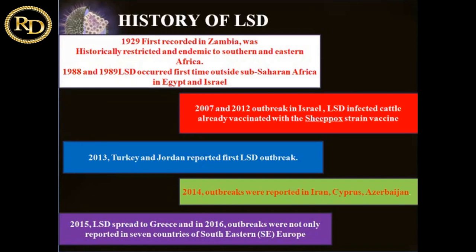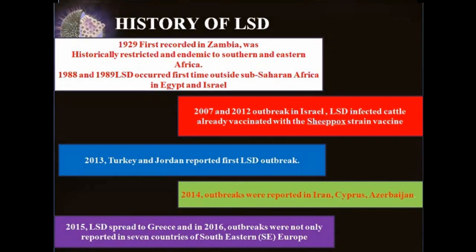Now the main disease — LSD. Lumpy skin disease belongs to the family Poxviridae, under the genus Capripox. This genus Capripox comprises three main members: sheep pox virus, goat pox virus, and the lumpy skin disease virus. This lumpy skin disease virus is also called Pseudoarticaria, Netheling disease, or Nodularis bovis.